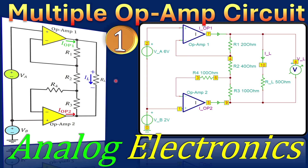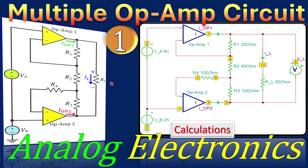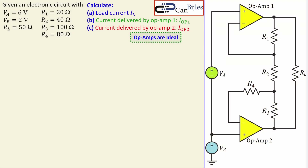Greetings and welcome to a new video about analog electronics. We continue with a different circuit — in this case we will discuss multiple op-amp circuits, so we have more than one. We will also see how we can describe the current and voltage for this specific circuit. This will be our first example; we will see more complicated examples later. We will look at the calculation step by step and also verify these in SPICE simulations.